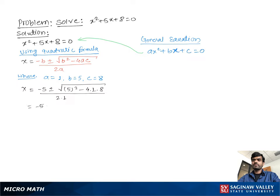Then we have negative 5 plus or minus square root of 5 squared, which is 25, minus 4 times 1 times 8, which is 32, over 2. Then we have negative 5 plus or minus square root of 25 minus 32, which equals negative 7, over 2.